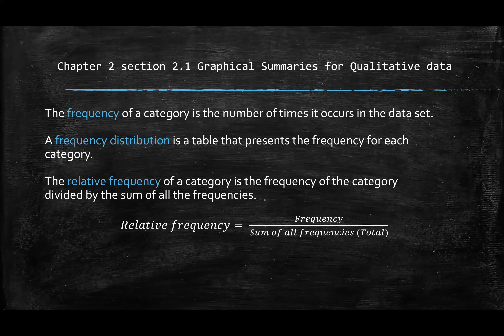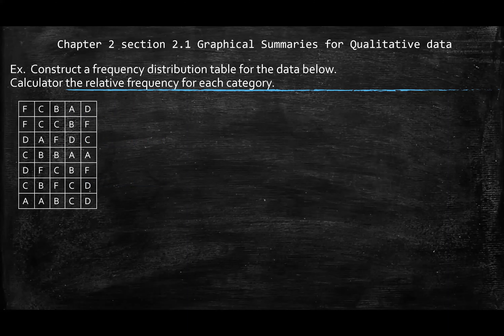I'll go through the definition first and then we'll attack the problem — actually, let's attack the problem first. Section 2.1: we're looking at a frequency distribution for a qualitative variable. Reminder: qualitative data is your category.